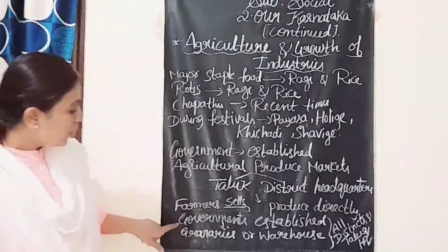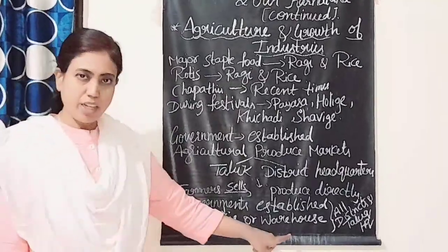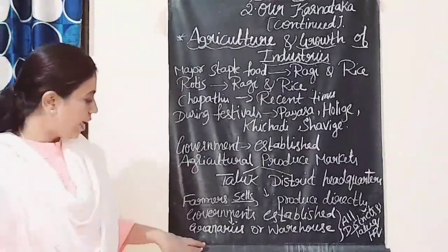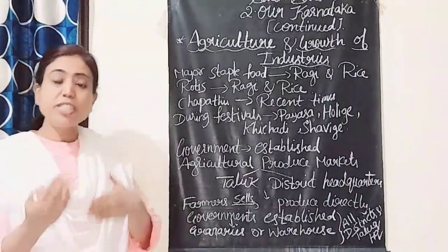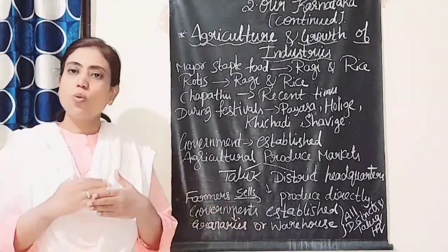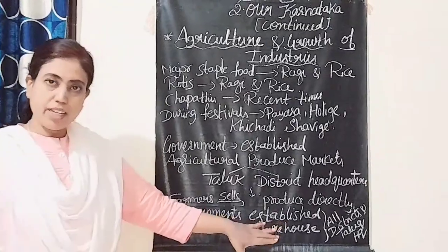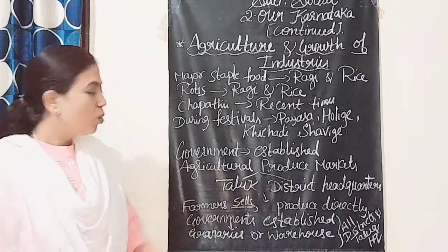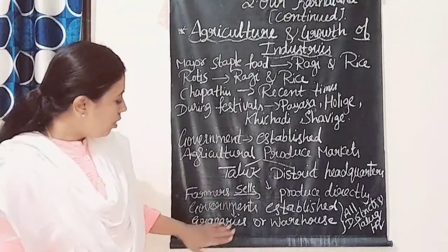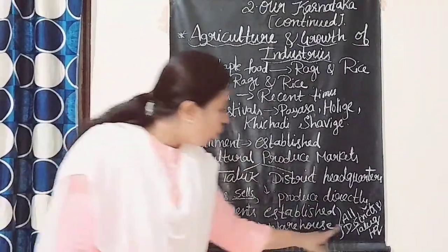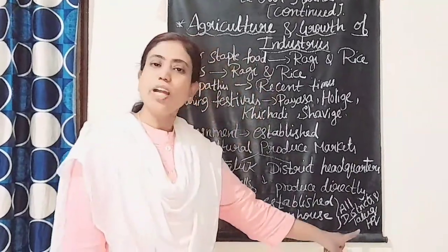The government has also established granaries and warehouses. Granaries are for storing food crops. Warehouses are for storing other goods like wood and iron. These are established in all district and Taluk Headquarters and are useful for farmers.